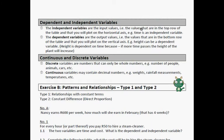The independent variable are the input values that are on the top row of the table, and you will put it on the horizontal axis of the graph. And the dependent variable are the output values, so the answer, the values that are on the bottom row of the table, and you plot this on the variable axis. For example, height can be dependent, and then time is independent. So height is dependent on time, because time passes, the height of the plant will increase if it's about a plant and its height.